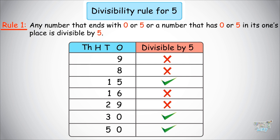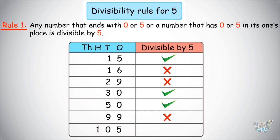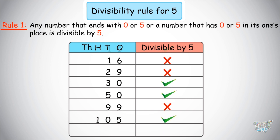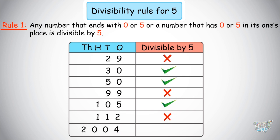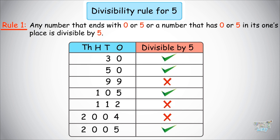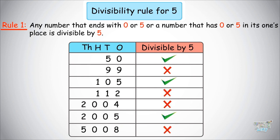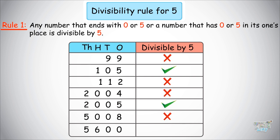50: yes, this is also divisible by 5. 99: no, because ones place is 9. 105: this is divisible. 112: no, because ones place is 2. 2,004: no, because the ones place is 4. 2,005: yes, divisible because the ones place digit is 5. 5,008: no, because the ones place is not 0 or 5. 5,600: yes, because the ones place digit is 0.